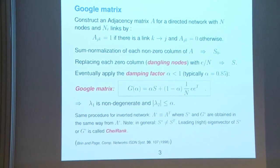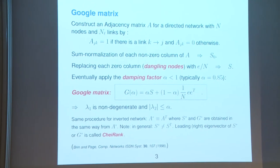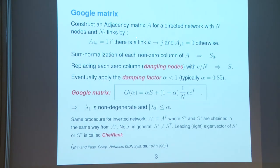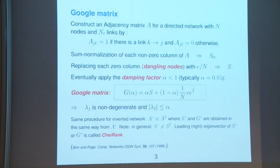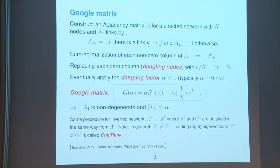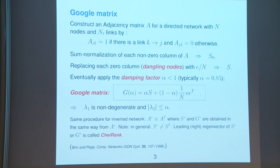If you have a directed network, you construct the adjacency matrix. For a directed link from node k to g, we place matrix element A_{gk} = 1, otherwise 0. The matrix is not symmetric — that's important. We then normalize all non-zero columns of A to sum to 1 by dividing by their column sum, giving the matrix we call A_0.